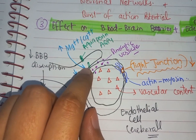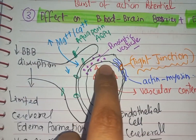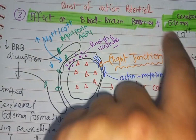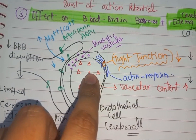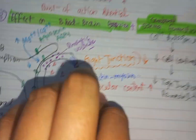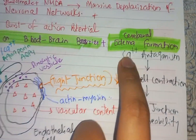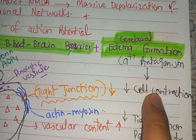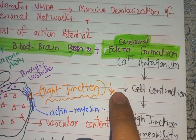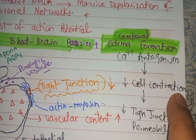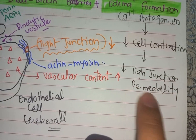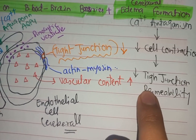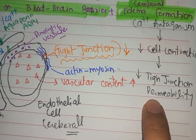Magnesium again acts as a calcium antagonist. It binds with the calcium channels so calcium does not enter into the cell. As a result, the permeability of the tight junctions is maintained and vascular contents are not released out of the cell. With decreased cell contraction and decreased tight junction permeability, the cellular content is not released and hence cerebral edema formation is decreased.